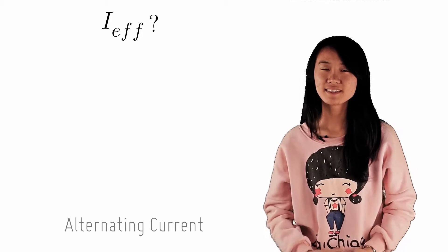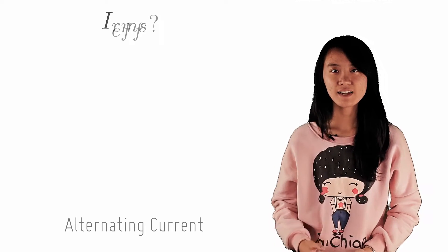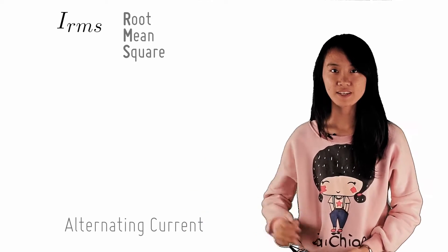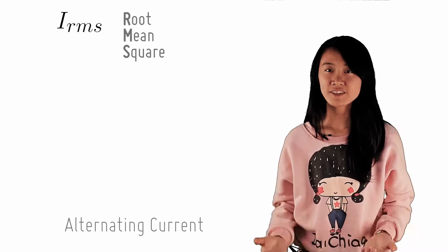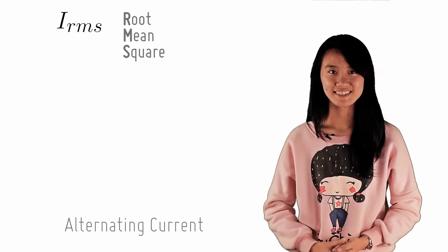As brought up by the previous checkpoint, what is this effective current? In fact, we call this effective current the RMS current, which stands for root, mean, square of the current. What is this strange quantity? Well, this is the root of the mean of the square of the current.